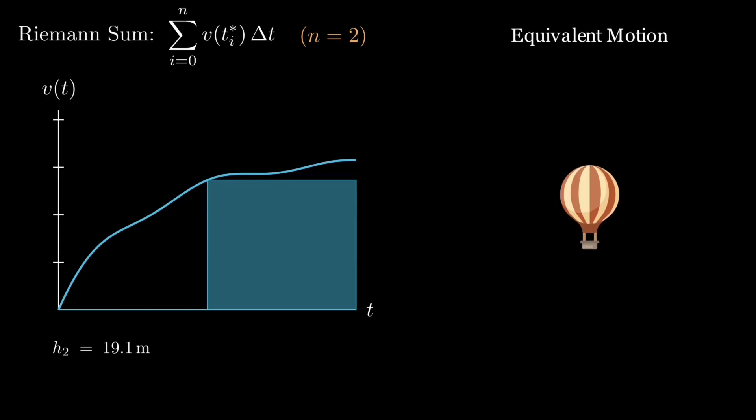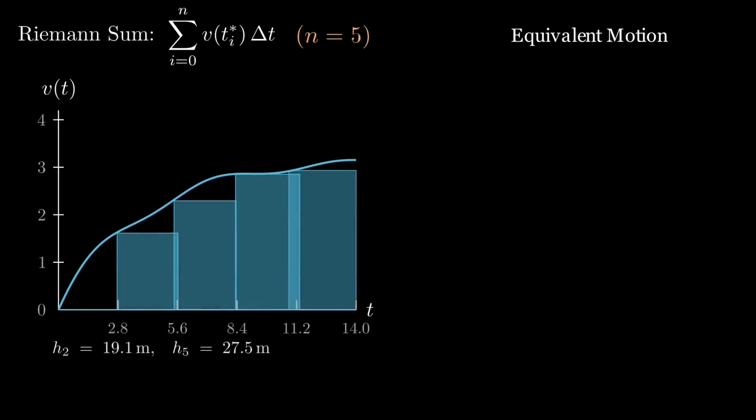With just two wide slices, our rectangles are crude, and the total height is small, and the motion looks blocky. Refining to five slices improves the estimate. Each step adds a smaller, better matched contribution.